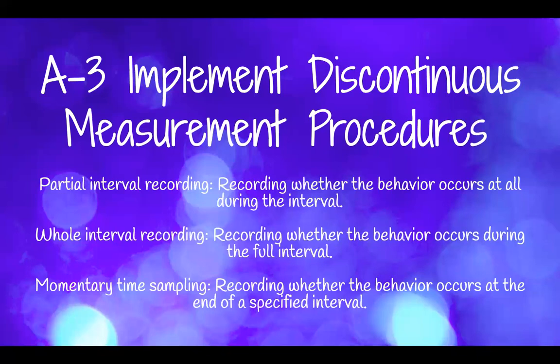Momentary time sampling is recording whether the behavior occurs at the end of a specified interval. So with 15-minute intervals, you might look up at the end of the interval and record whether your learner is currently hitting at that moment. Even if the behavior was occurring two minutes ago, with momentary time sampling you're not going to record that interval unless it's occurring at the end.